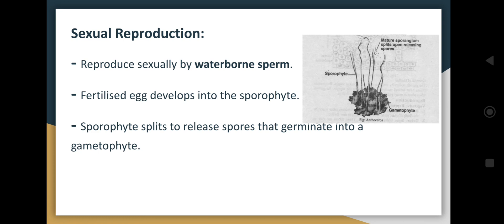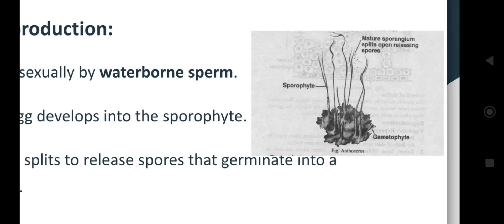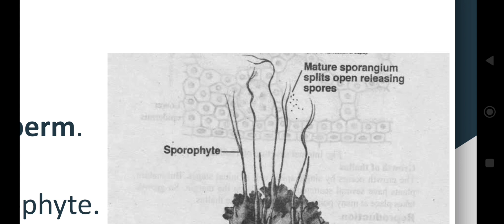In sexual reproduction, water-borne sperms are involved. The sperms require water as a medium through which they swim to reach the egg, fertilize it, and develop into a sporophyte. The sporophyte then splits to release the spores, which germinate into a gametophyte. In this image, we can see the elongated horn-like structure that has split into two flaps from where the spores are being released.